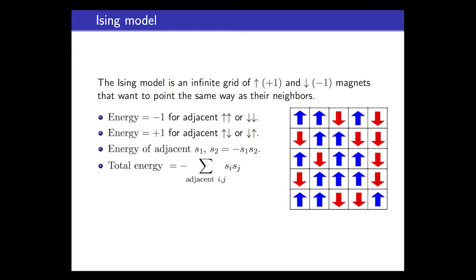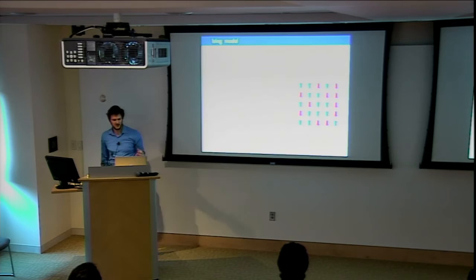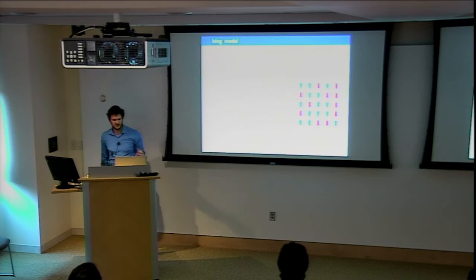The model we're going to talk about is called the Ising model—a very canonical toy model representing magnetism. You have a grid of little magnets called spins, and they can take on values of up (+1) or down (−1). In this model, the spins want to point the same way, like a piece of iron where all the magnetic domains align. If two adjacent spins point the same way, we give it an energy of −1 (lower energy is good). If two spins point opposite ways, we give it an energy of +1. The total energy is just the sum of contributions from all pairs of adjacent spins.